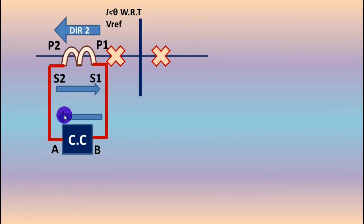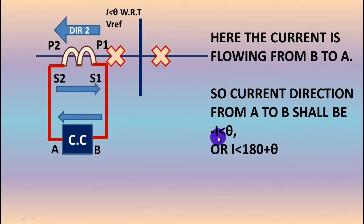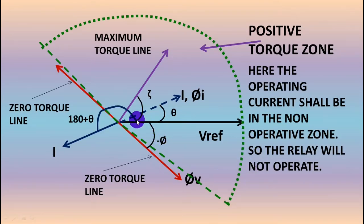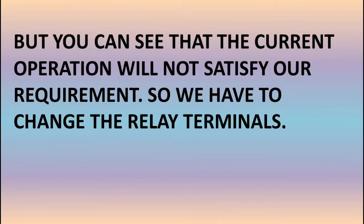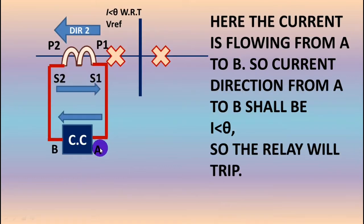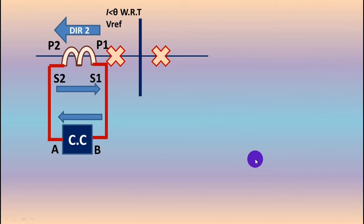So we see that for direction 1 it is generating positive torque, which means for direction 2 it will not generate positive torque. The connection is the same, but the current is flowing in the other direction, so here the current will flow from B to A. The value from A to B will be minus I theta, or 180° plus theta. Plotting it in the phasor diagram, this becomes 180° plus theta with respect to V reference — the current is lying in the negative torque zone, so the relay will not operate. Our desired operating condition is not achieved. We have to alter the relay terminal. By simply swapping terminals A and B, for direction 2 the current flows from A to B, so the relay will trip — and for the other case, the relay will not trip.